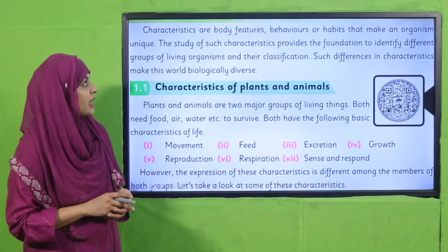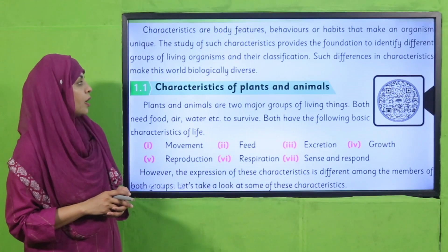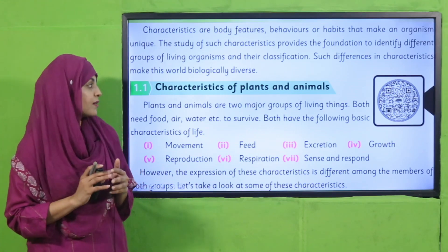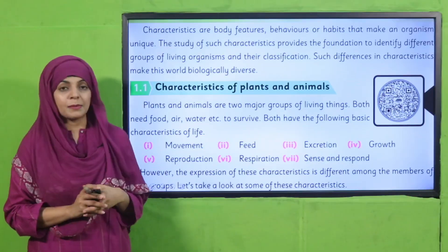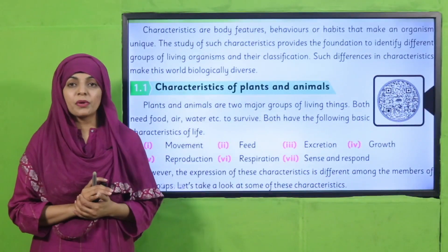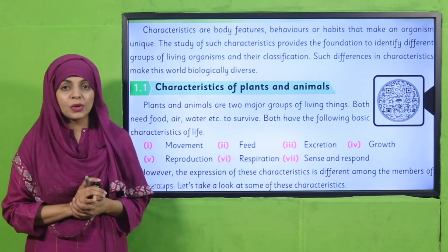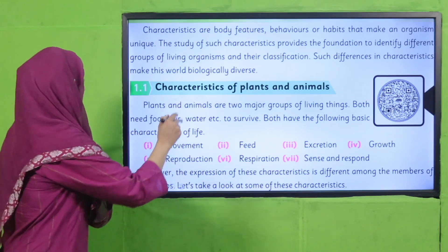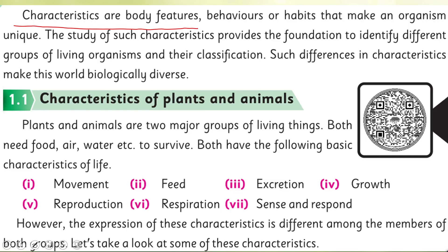Now let's move forward to the reading. Please open page in unit number one, Characteristics of Plants and Animals. I hope everybody has opened the page. Put your fingers where I will read. Characteristics: body features, behaviors, or habits that make an organism unique.